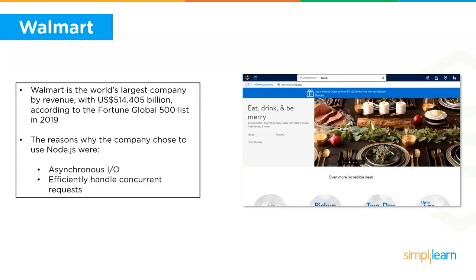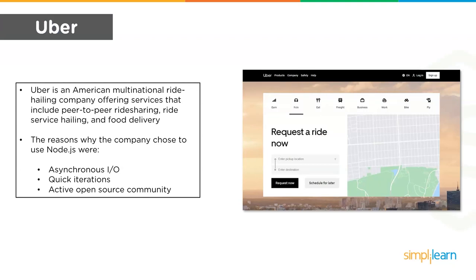Walmart is the world's largest company by revenue, with around 514 billion US dollars according to the Fortune Global 500 list in 2019. The reasons Walmart chose Node.js were asynchronous I/O and efficient handling of concurrent requests. Asynchronous I/O allows other processing to continue before a transmission has finished. Node.js efficiently handles concurrent requests using thread pools and event queues.